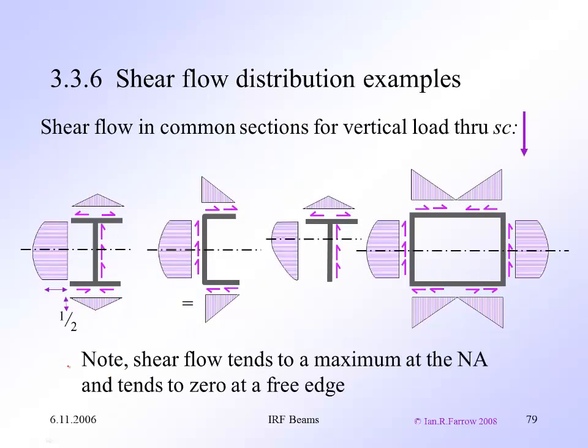Here's some examples for some more common sections. So for a symmetric I beam, the shear flow in the web tends to a maximum at the center, where the neutral axis is. Same for the C section. And again, note that where you've got webs joining flanges, then the shear flow has to go around that corner. So you're going to have identical shear flow. And the T section follows a similar sort of pattern, going to zero at the free edge here.